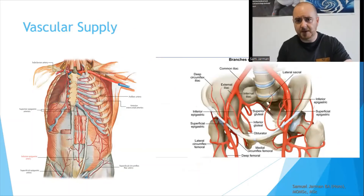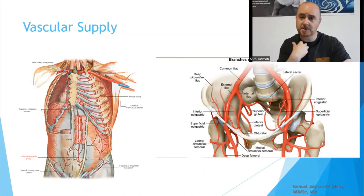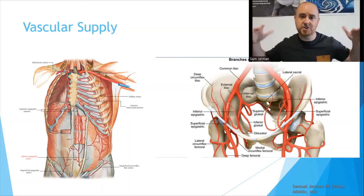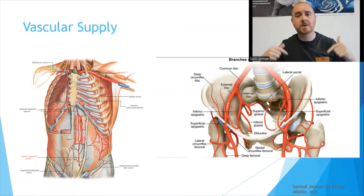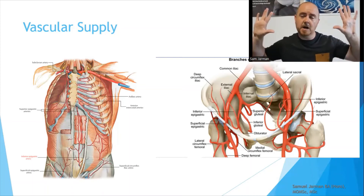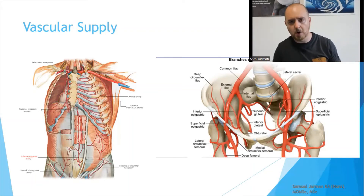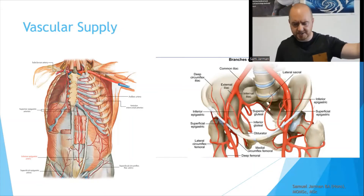...you are looking at the epigastric circulation — going as high as the subclavian artery through the internal thoracic branch of the mammary until it branches off and becomes a superior epigastric. You're looking at the iliac circulation, which comes off the abdominal aorta through the iliac region, sending up the inferior epigastric. And to some degree, you're looking at lumbar circulation and the lumbar arteries.